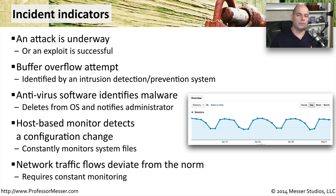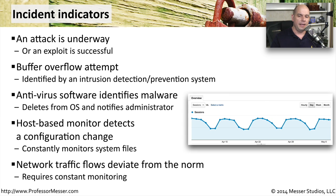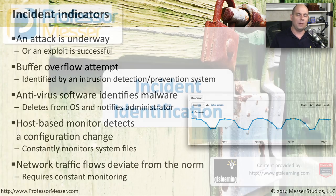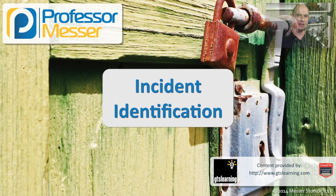Another way to look for security incidents that may be occurring is to look at your network traffic. Network traffic tends to be very predictable day after day. If there are any significant changes or things deviate from what is normal, it may be indicative of an ongoing problem. Hopefully these precursors and active indicators of a security incident can help you get a better idea of what might be happening in your environment.